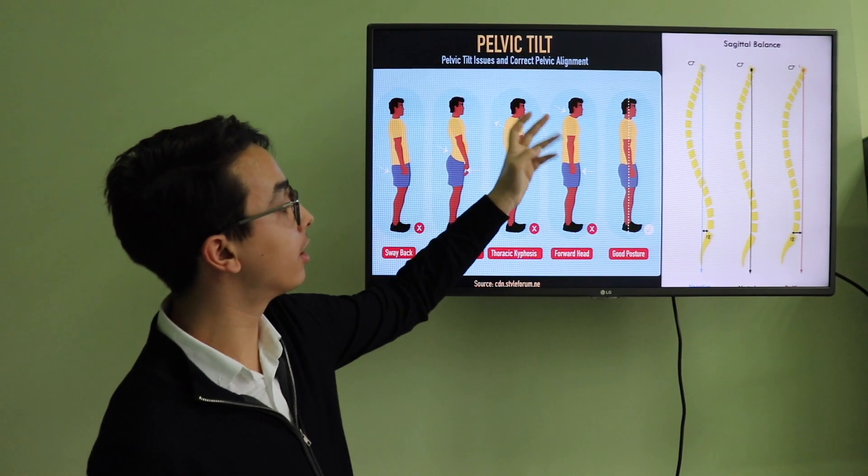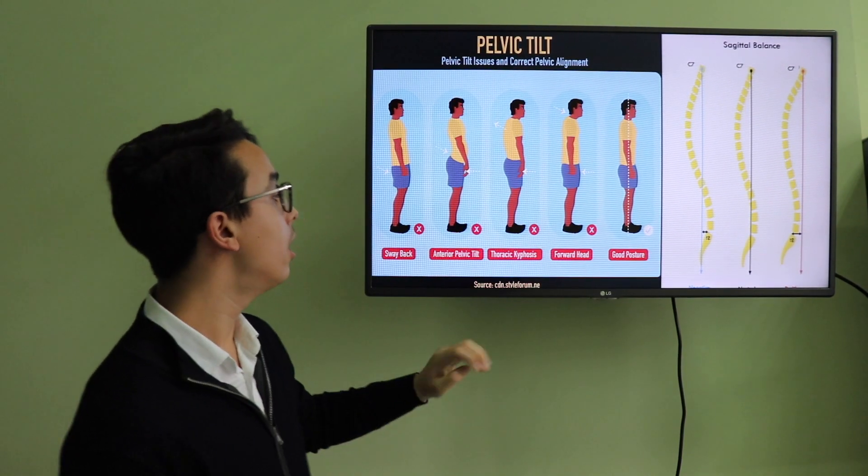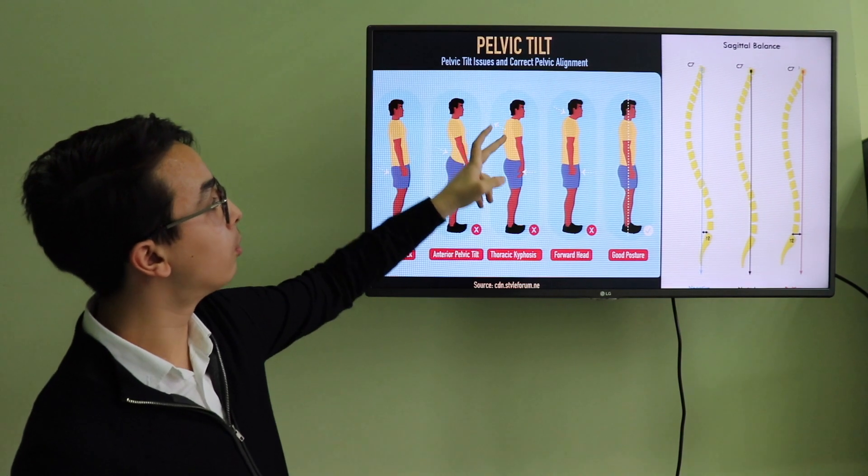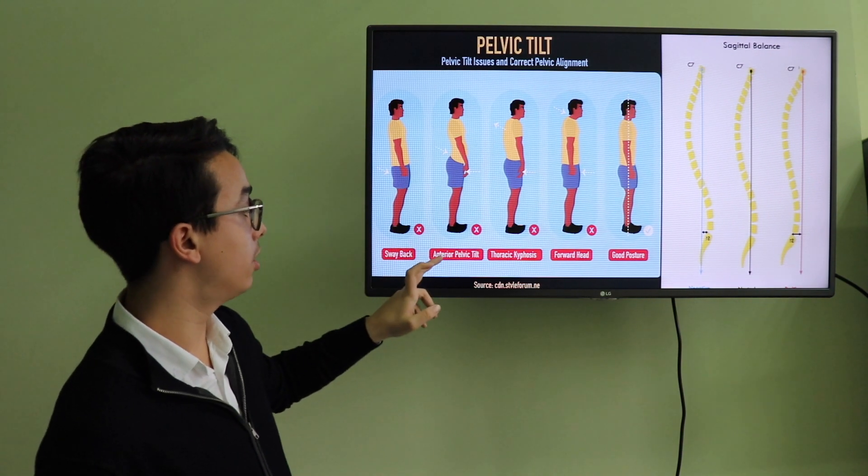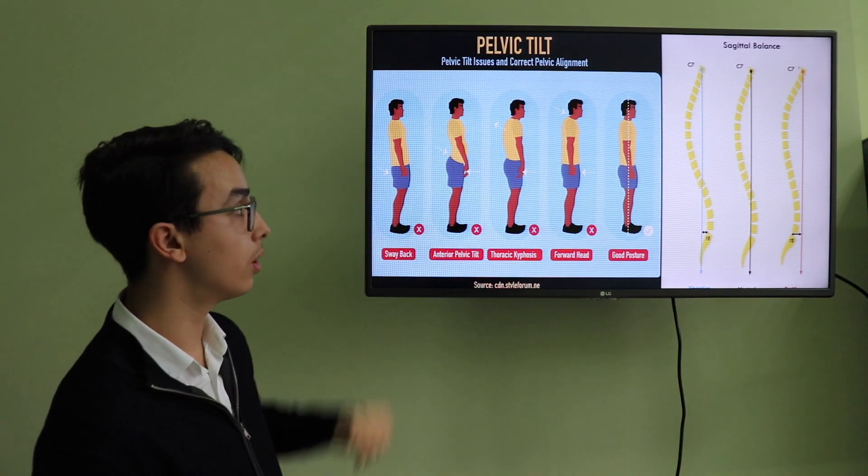This one is not a normal one because the head is forward. This one is a forward kyphosis when the back is more tilted posteriorly. This one is an anterior pelvic tilt and this one is a sway back.